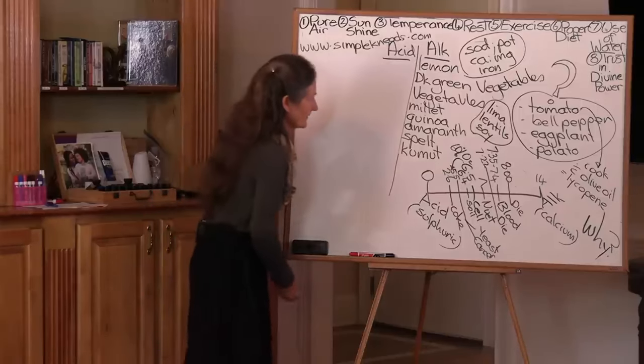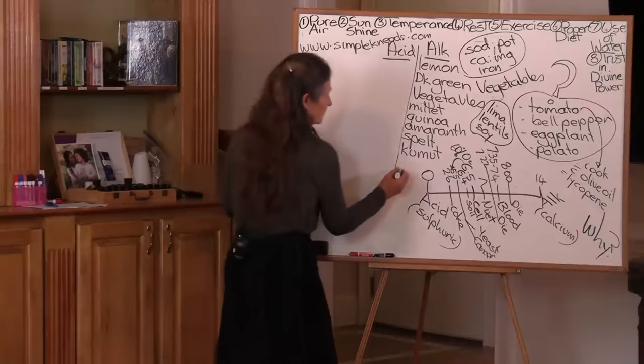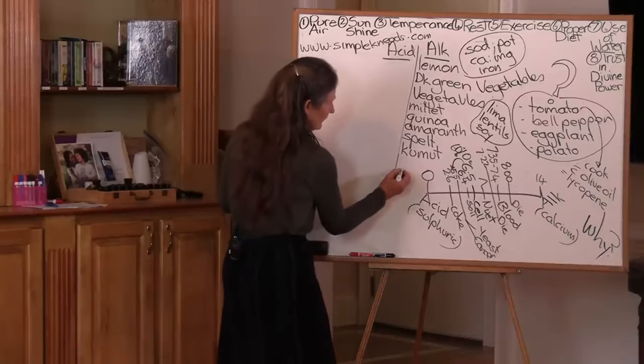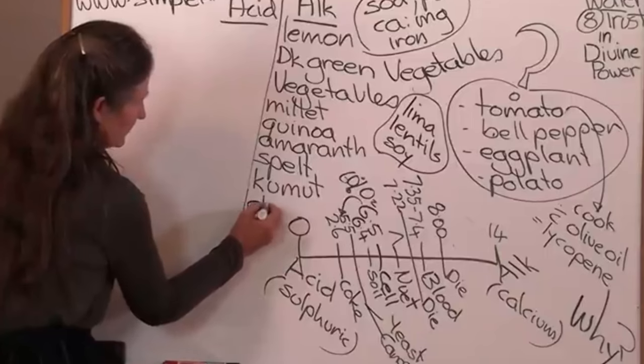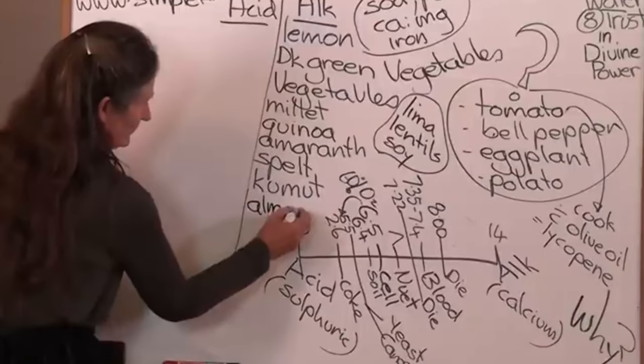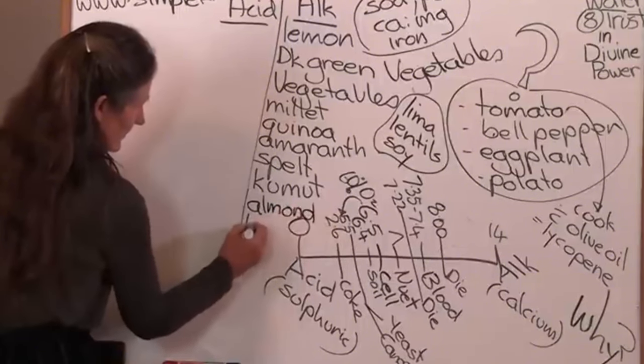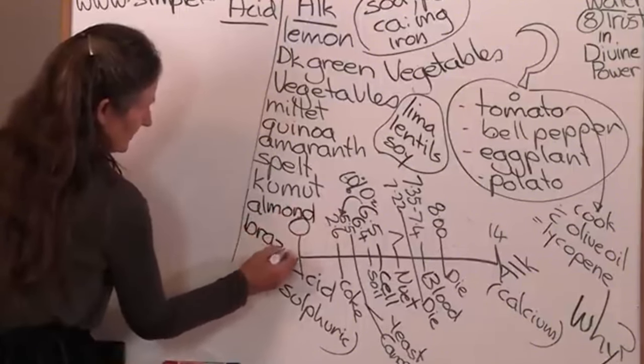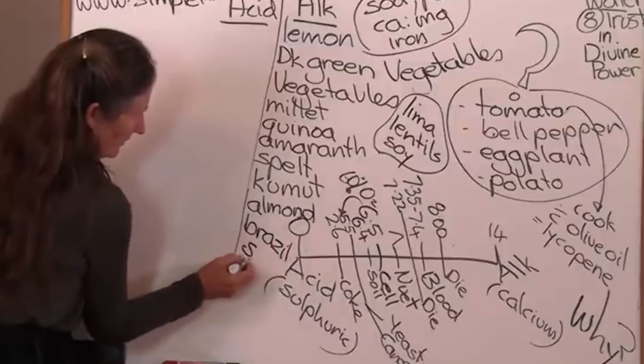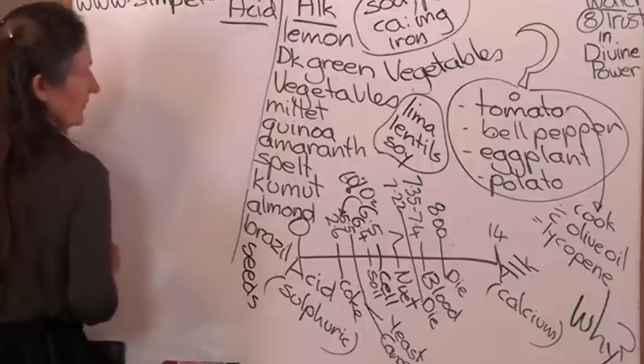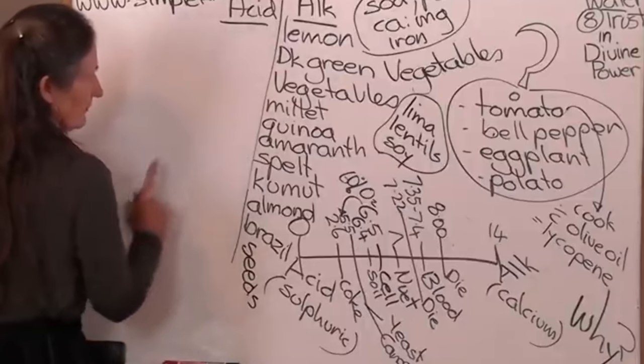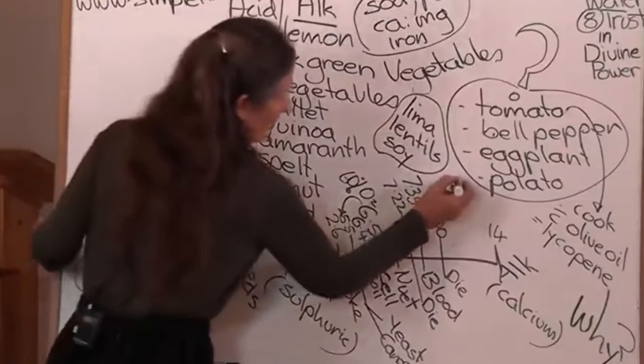So coming back to our alkaline forming foods, the two nuts are your almond and Brazil. And all your seeds have an alkaline effect. So what has an acid effect? Before we go there, there's one other is fruit.